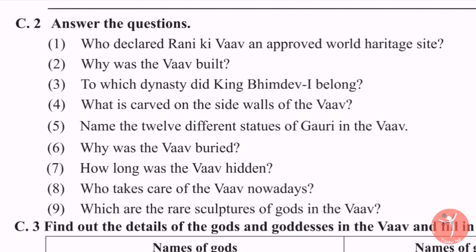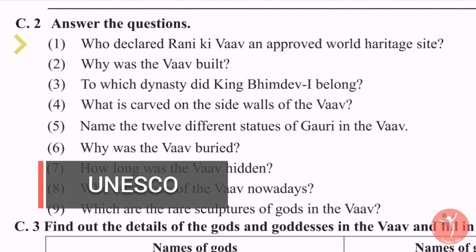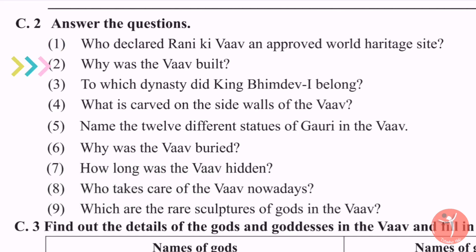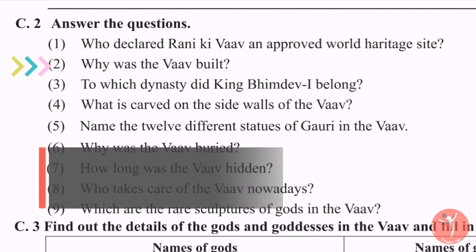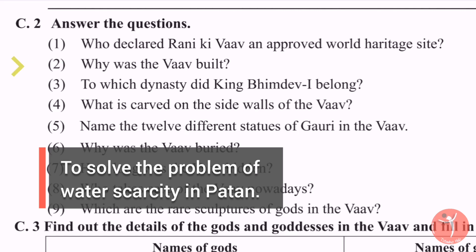Comprehensive activity number 2: answer the questions from the main text. First question: Who declared Rani ki Vav an approved World Heritage Site? It was declared by UNESCO. Second question: Why was the Vav built? The Vav was built to solve the problem of water scarcity in Patan.